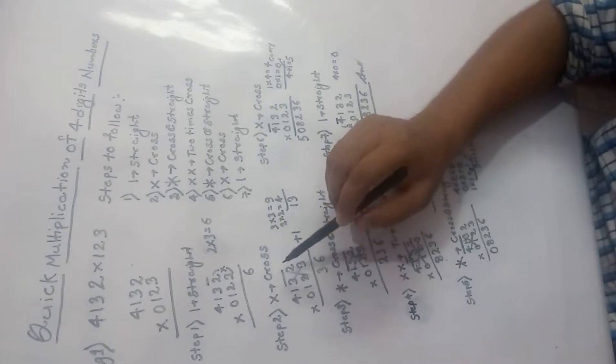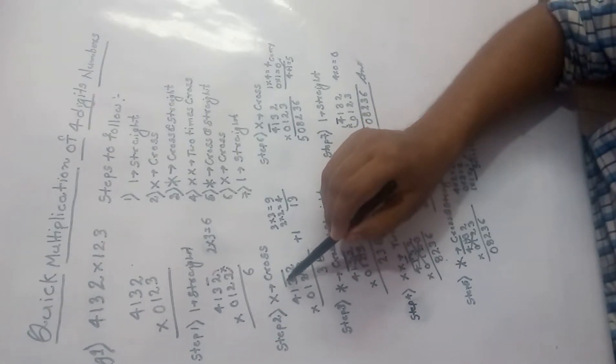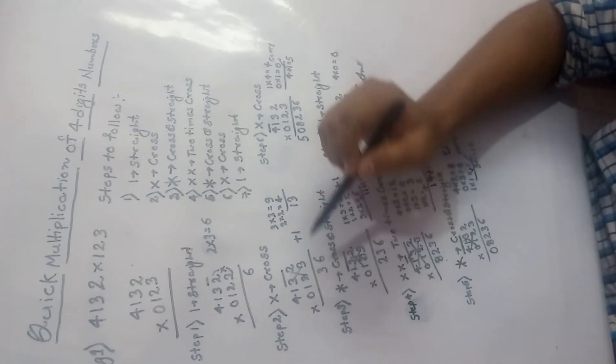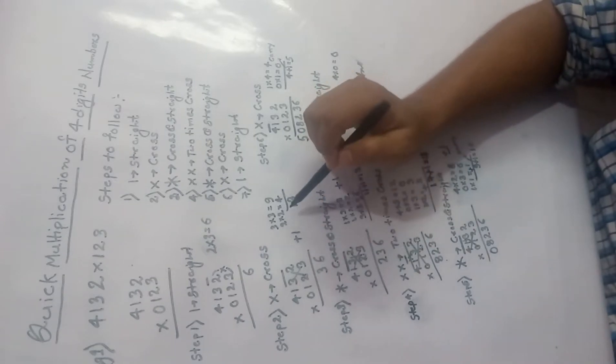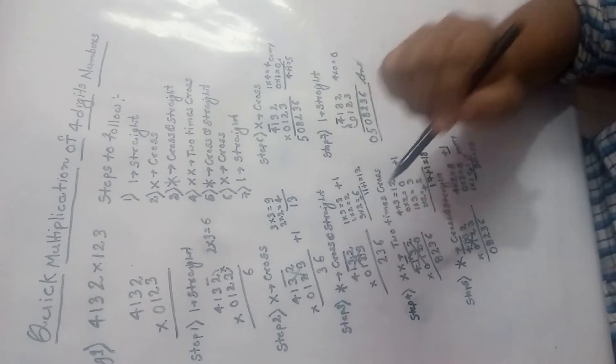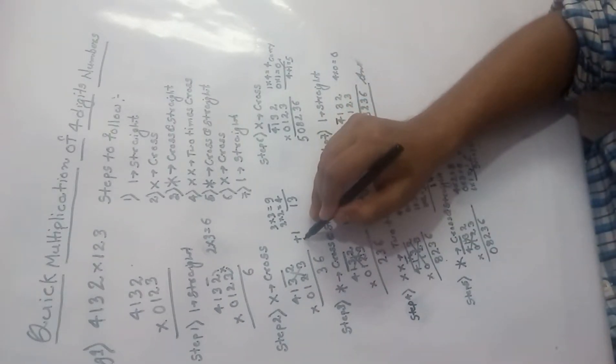Second step is cross multiplication. So I am going to apply over here. So 3 into 3 is 9, 2 into 2 is 4, 9 plus 4 is 13. 13, 3 carry 1. So I have written carry plus 1 over here.